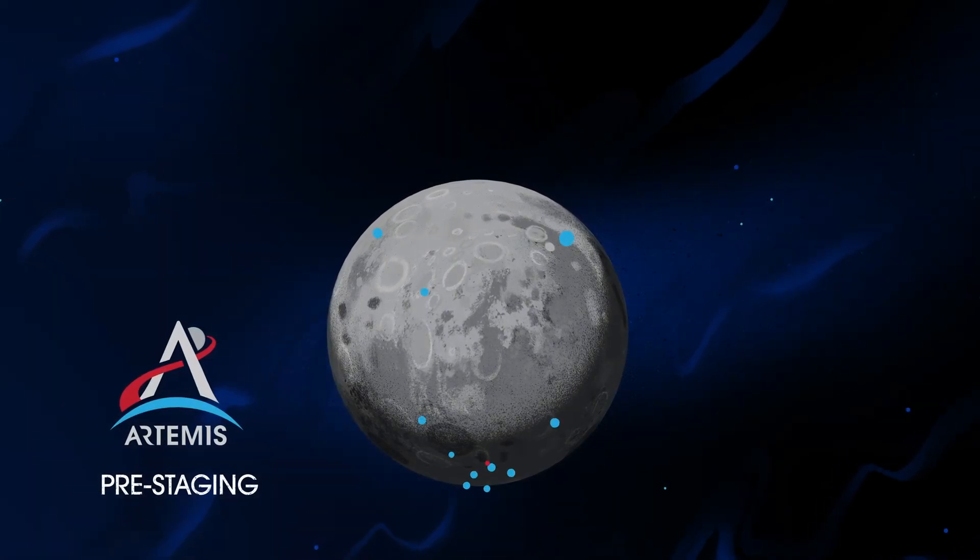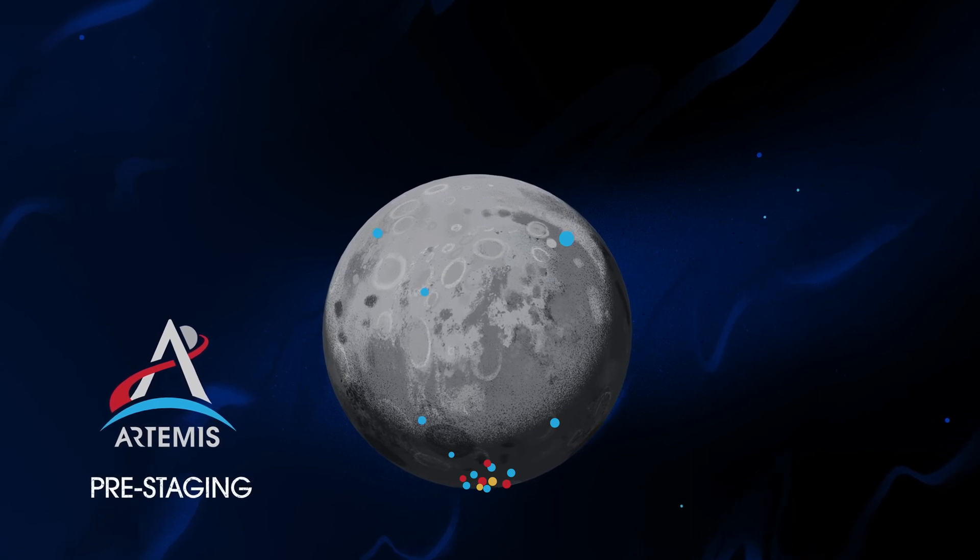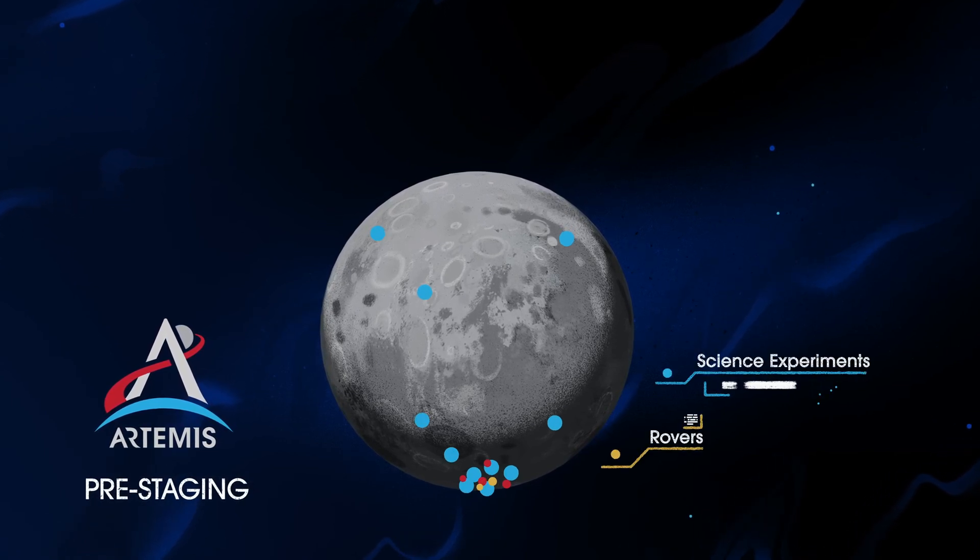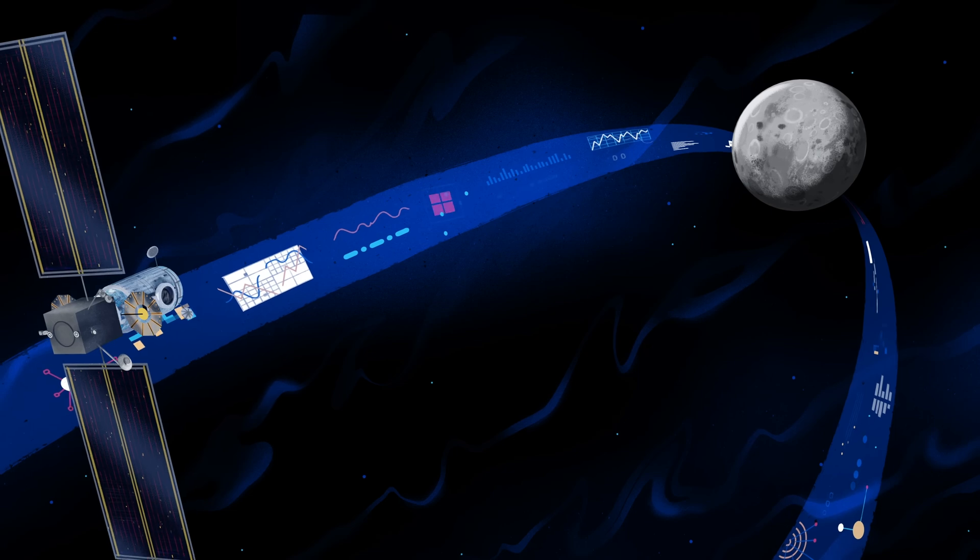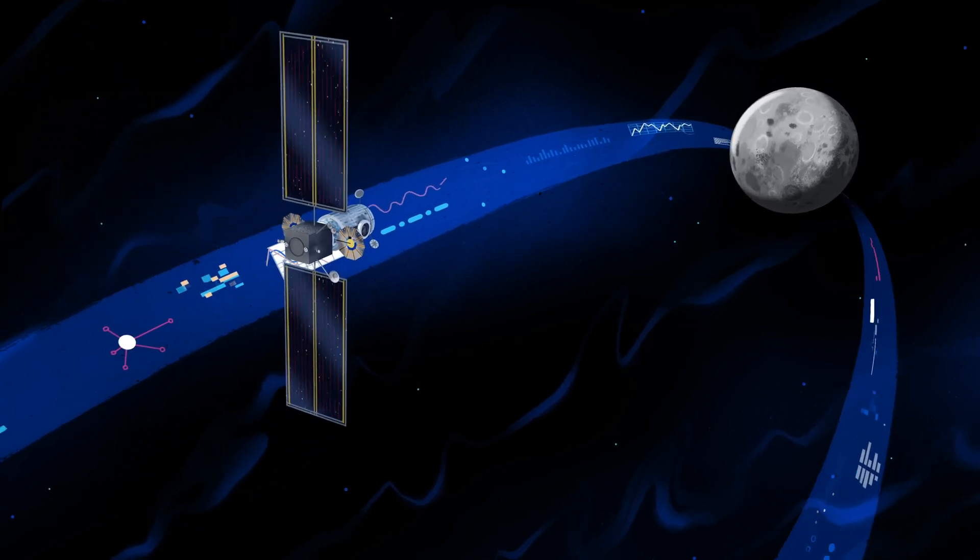Everything needed for lunar missions will be positioned in advance by commercial and international partners. This includes rovers, science experiments, and human-rated systems on the surface. But it also includes a dedicated lunar station in orbit around the Moon called Gateway.